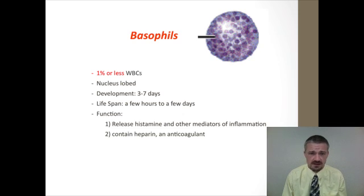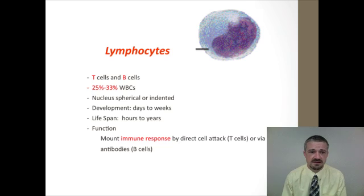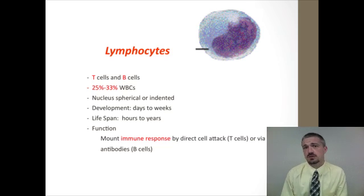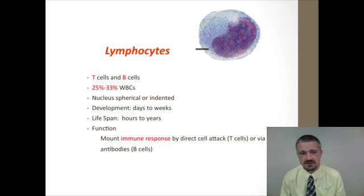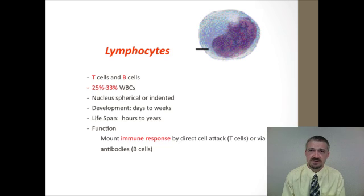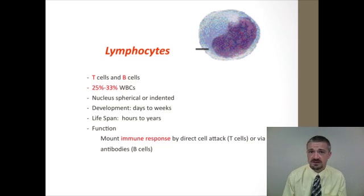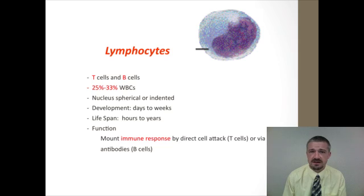That completes the granulocytes — remember, they all end in 'phil,' so 'phil eats grains.' The agranulocytes include lymphocytes, the second most common white blood cell. We'll discuss them in more detail with the immune system. Lymphocytes include T lymphocytes and B lymphocytes, involved in the specific immune system: B cells make antibodies, and T cells attack foreign cells. Some memory lymphocytes can live for years.